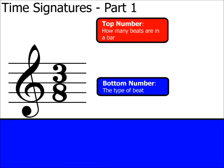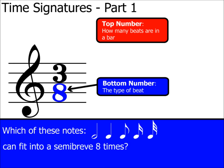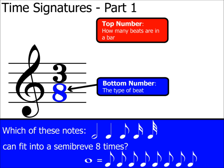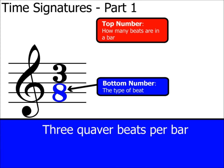Let's look at another example. As there is an eight at the bottom, you need to work out which of these notes can fit into a semibreve eight times. A minim only fits twice, a semiquaver fits 16 times, whereas a quaver, which is worth half, fits eight times into a semibreve. So we've worked out that eight represents a quaver. The full explanation of this time signature is that there are three quaver beats in each bar — the three being the number of beats, the quaver being the type of beat.